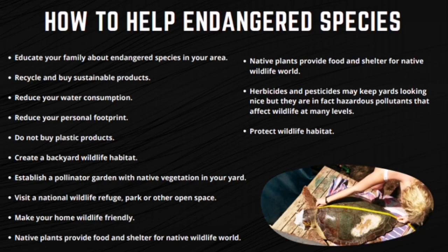Herbicides and pesticides may keep yards looking nice, but they are hazardous pollutants that affect wildlife at many levels. Many herbicides and pesticides take a long time to degrade and build up in soils or throughout the food chain. Predators such as hawks, falcons, owls, and coyotes can be harmed if they eat poisoned animals. Some desert frogs that live in soils and breathe through their skin will also find such herbicides extremely toxic.